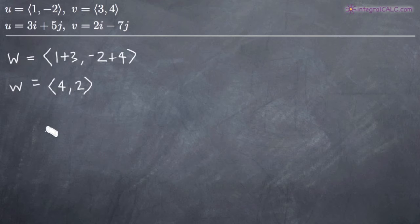So now if we go ahead and take a look at our second example, we have u equals 3i plus 5j and v equals 2i minus 7j. This is just a different notation for a vector.